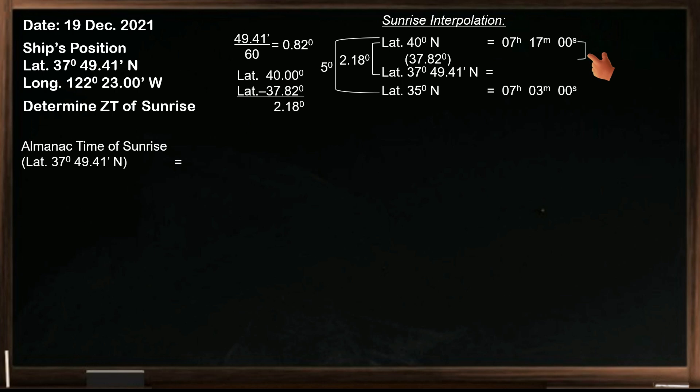On the other side, the difference here is unknown, so let x be the unknown. The difference in the time of sunrise between latitude 40 and 35 degrees north is 14 minutes. So we can have now an equation: 2.18 degrees divided by 5 degrees is equal to x divided by 14 minutes. Cancel both units of degree and cross multiply. Then transpose. The value of our unknown is 6.104 minutes, or 6 minutes 6 seconds. To find 6 seconds, multiply .104 by 60, since 1 minute is equal to 60 seconds.